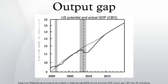Okun's Law describes the relationship between output and unemployment. It is based on regression analysis of US data that shows a correlation between unemployment and GDP. Okun's Law can be stated as: for every 1% increase in cyclical unemployment, GDP will decrease by a constant percent.